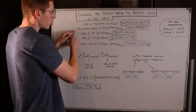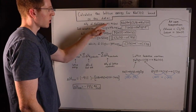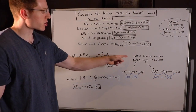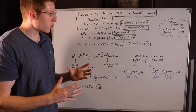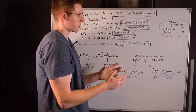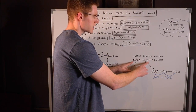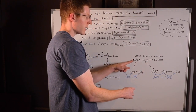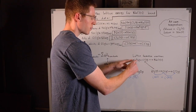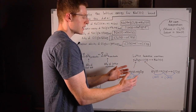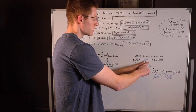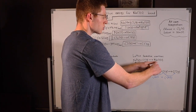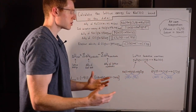Now that we have all of the equations and energies associated with these chemical processes, we can start to think about how a lattice actually forms. A lattice forms from gaseous reactants — that's very important. These reactants always have to be in the gas phase and have their respective charges. Sodium is in group 1A and was ionized, so it has a plus-one charge. Chlorine is in group 7A and was given an electron, so it has a minus-one charge. They come together, their charges cancel out, and they make neutral NaCl solid.